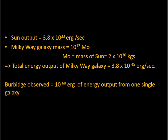Just to give you an idea, the output of the Sun is 3.8 into 10 to the power 33 ergs per second. The mass of the Milky Way galaxy is 10 to the power 12 solar masses. This means that the luminosity output of Milky Way galaxy is around 3.8 into 10 to the power 45 ergs per second. The object Geoffrey observed was throwing energy equivalent to 15 galaxies per second.